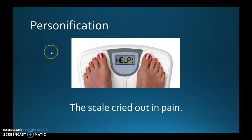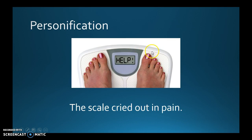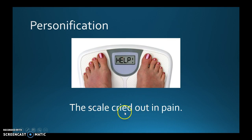Personification is when you ascribe a personality, or a personal trait, a human trait, or an 'alive' trait to something that's not alive — an inanimate object. For example: 'The scale cried out in pain.' Well, the scale can't really cry out in pain; it's an inanimate object. Crying out is a human trait, something that something alive could do. So you're assigning a human characteristic to something that's not human. What you're really saying is that this person is so heavy that the scale — that's the narrative device — the idea you're trying to get across is that they're too heavy.